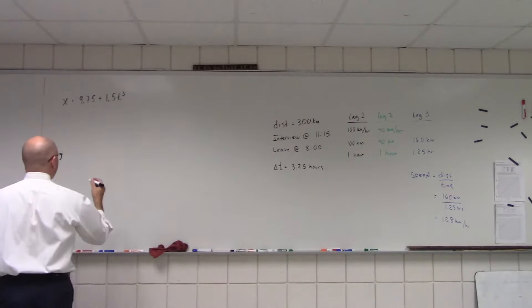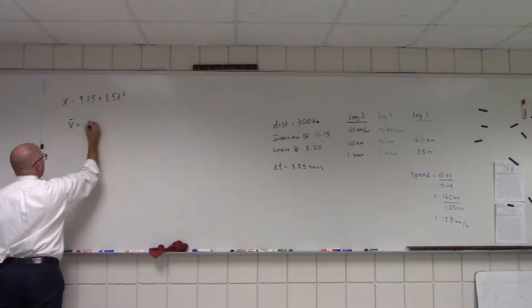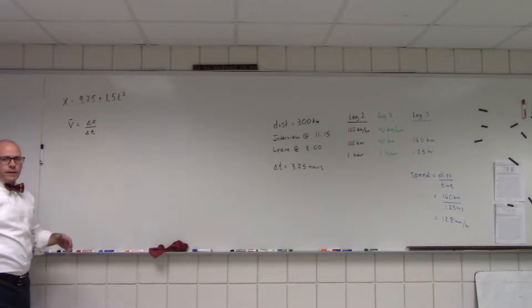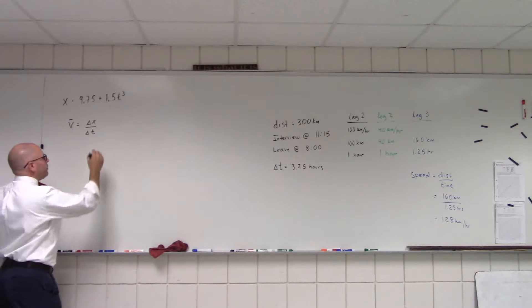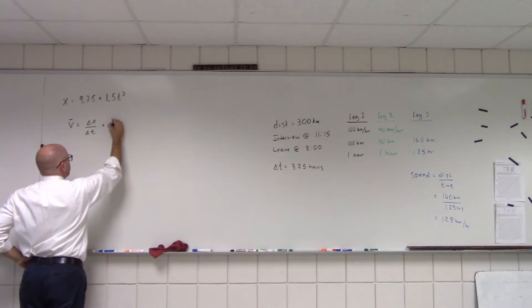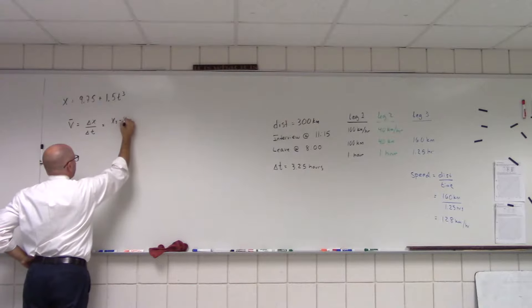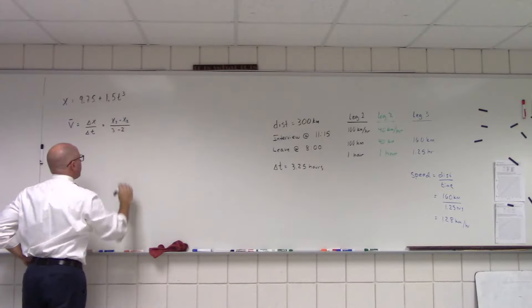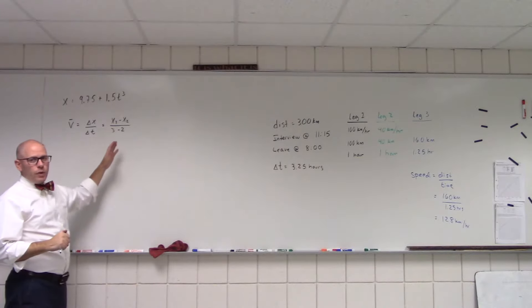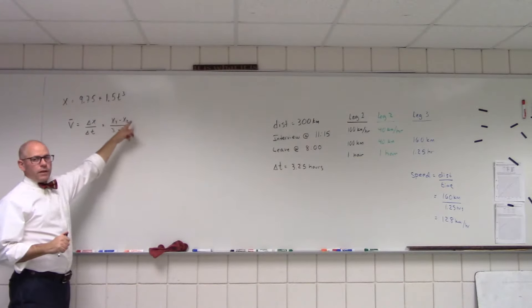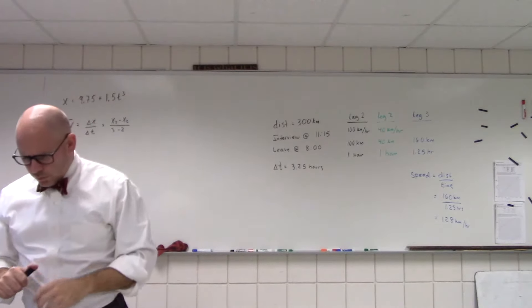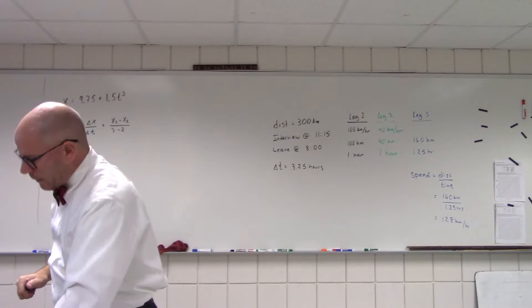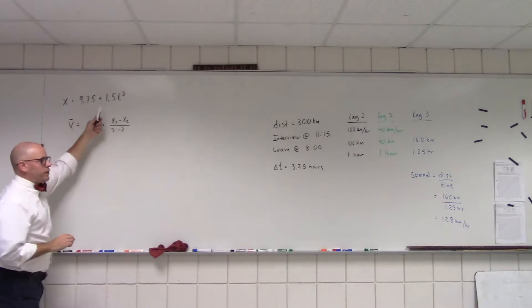All right, so how are we going to figure out average velocity? Well, the average velocity, as a general concept, is the change in the position divided by the change in time, which means for this problem, if they want the average velocity between 2 and 3 seconds, I'm going to take the position at 3, subtract off the position at 2, and divide by 3 minus 2. Let's make sure that's right. Looks good. Okay, so to do that, we've got to find out what the positions are.